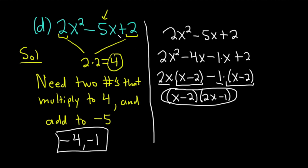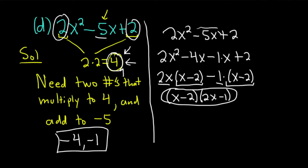Just to recap: whenever you have a quadratic where you can't factor by guessing and can't apply a formula directly, take the number in front of x squared and multiply it by the constant term. Then find two numbers that multiply to that product and add to the middle coefficient. Rewrite the polynomial by breaking up the middle term, then use factor by grouping from there. It's a very powerful method. Hopefully you've learned some math watching this video. If you've enjoyed it, make sure to check out more videos on Chegg. Until next time, good luck. Take care.